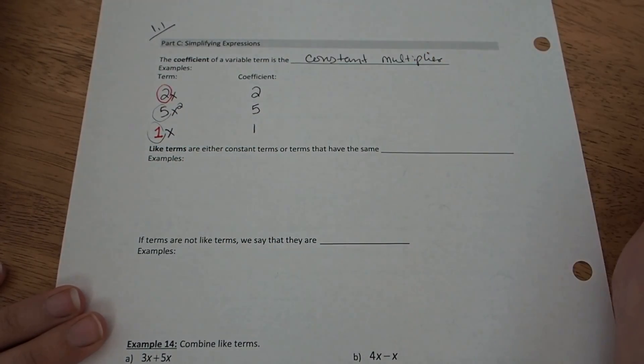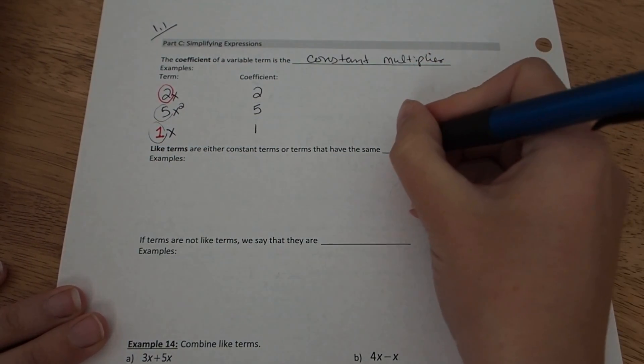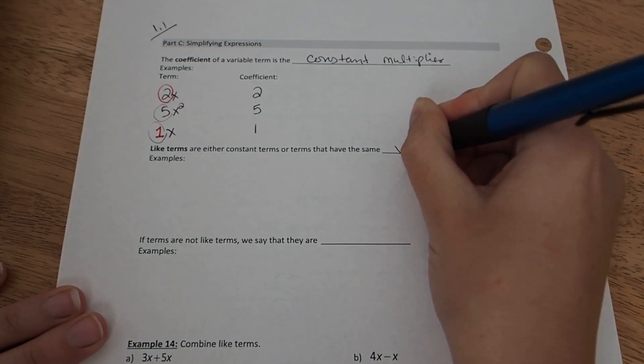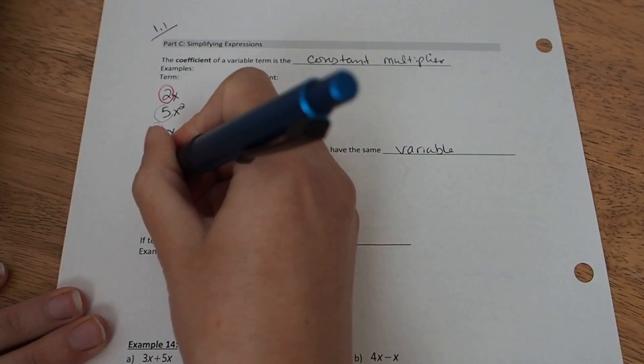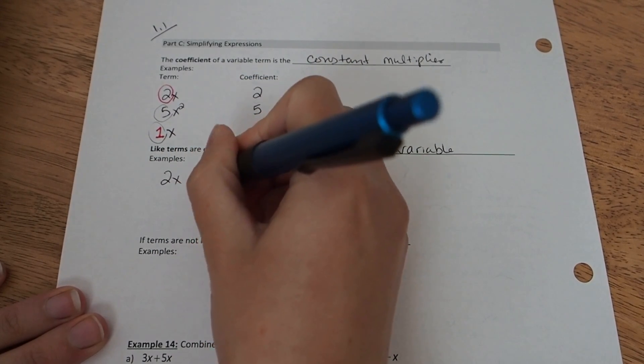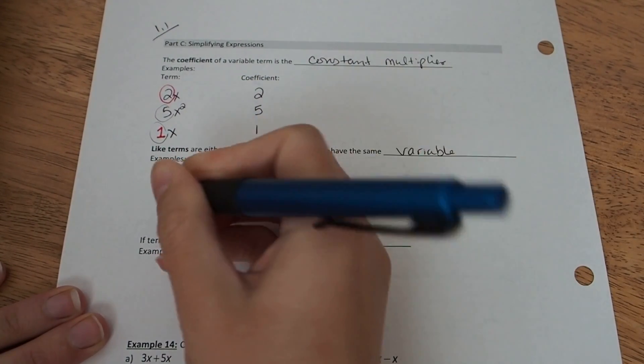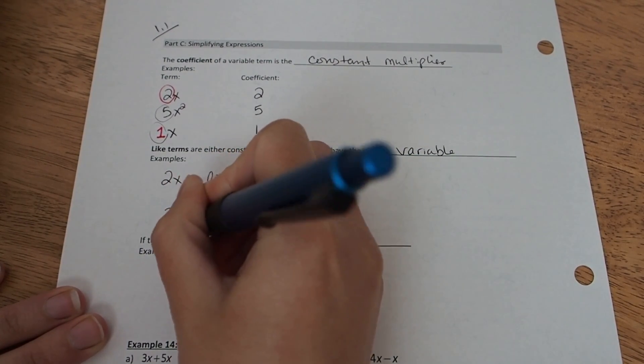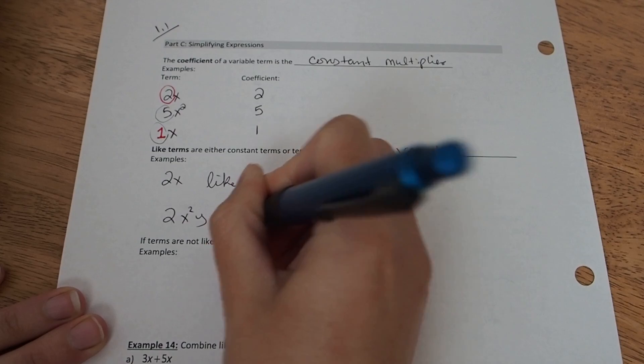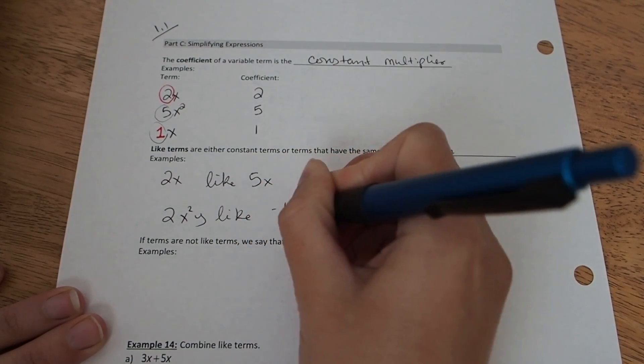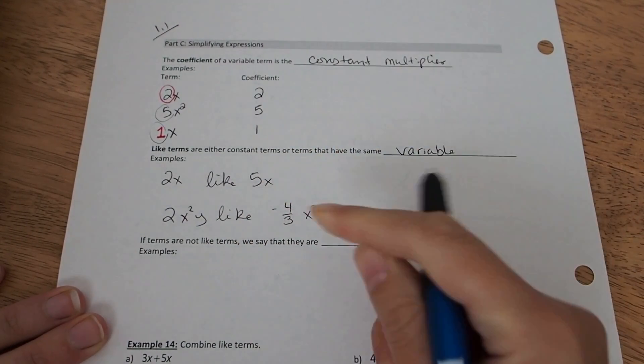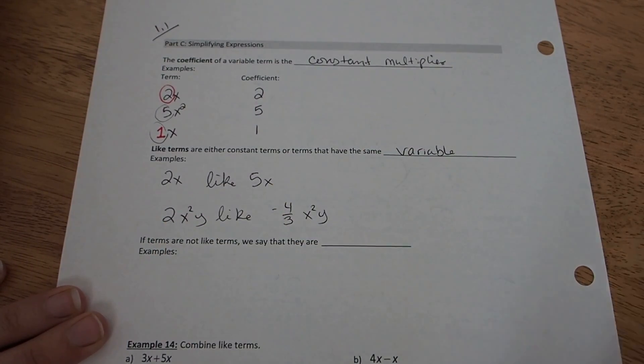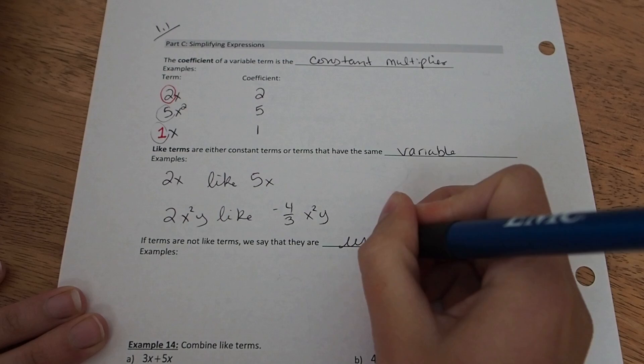Now, like terms are either constant terms or terms that have the same variable. So for example, 2x is like 5x, or 2x²y is like negative 4 thirds x²y. As long as they have the same exact variable component, the numbers can be different. If terms are not like terms, we say that they are unlike.